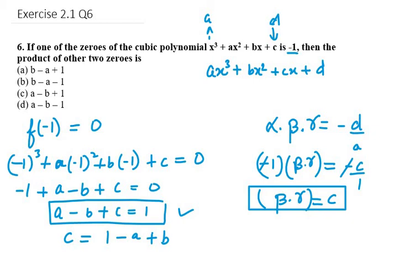So if I compare these two equations, my βγ equals 1 - a + b. So the right option from above is option a, because we have positive b minus a plus 1. So the right option is a.